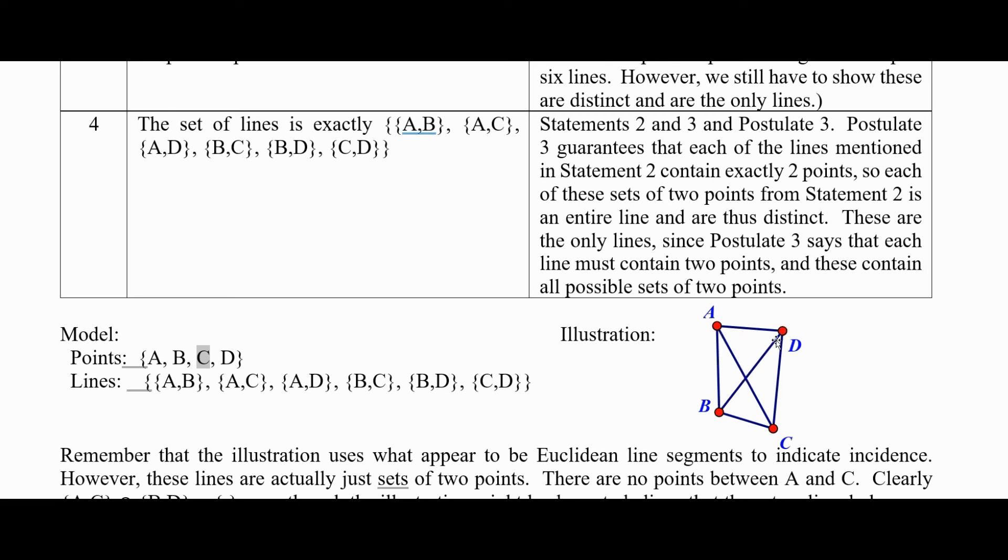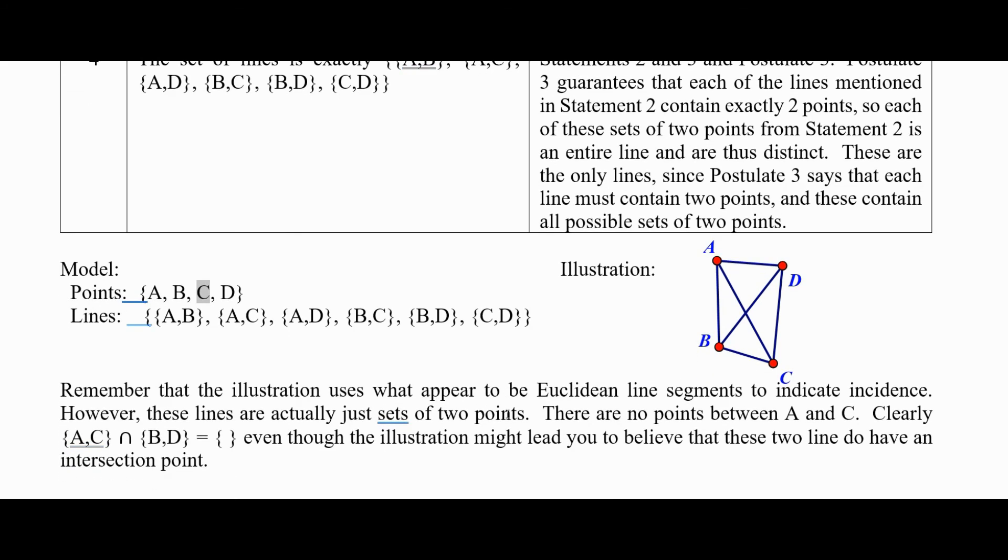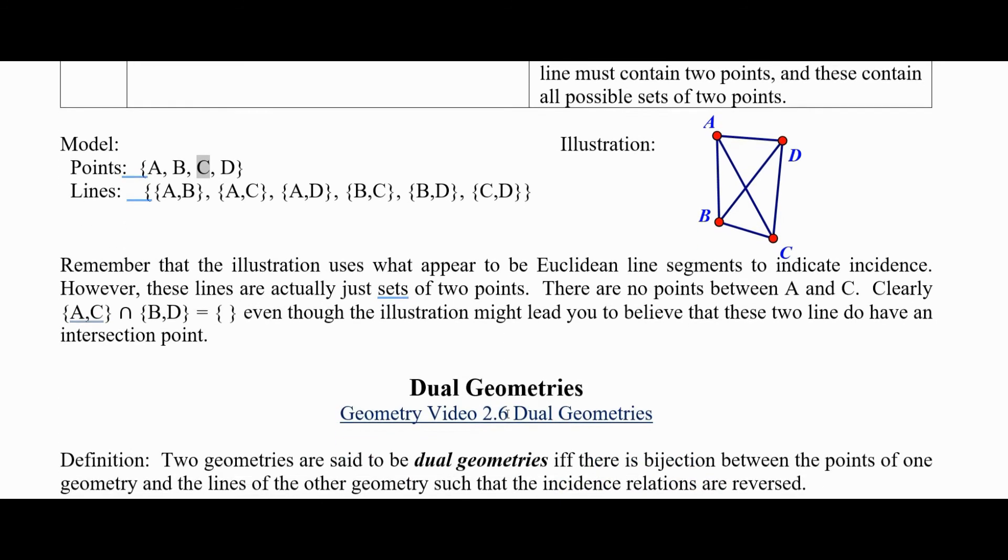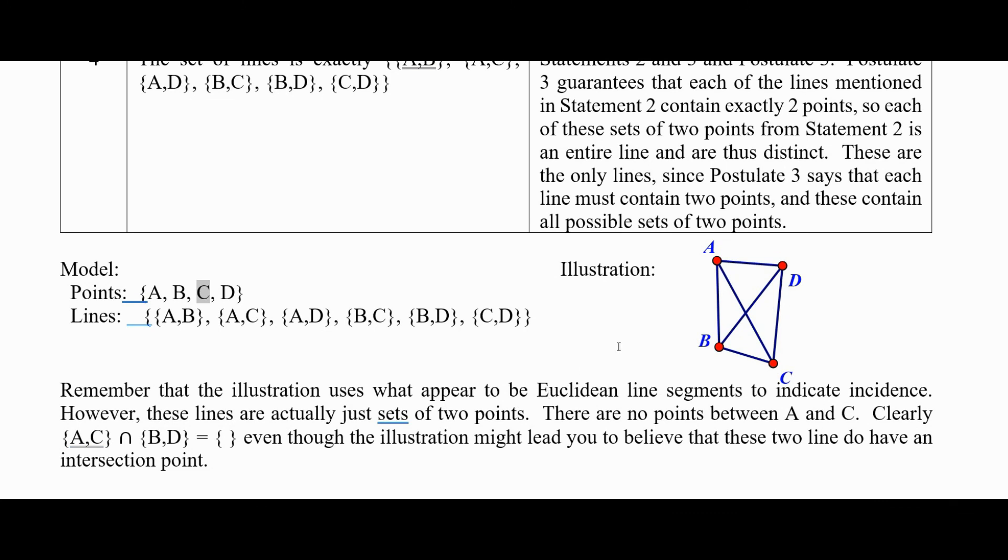So for example, it looks like this line B and D intersects with the line A, C. But of course, that's not true because we're just intersecting those two sets, which is the empty set. So there is no point here where these two cross. They don't really cross because there's not any points on these little blue parts at all. It's only just the four points there. All right. We're going to talk a little bit about dual geometries in the next video.